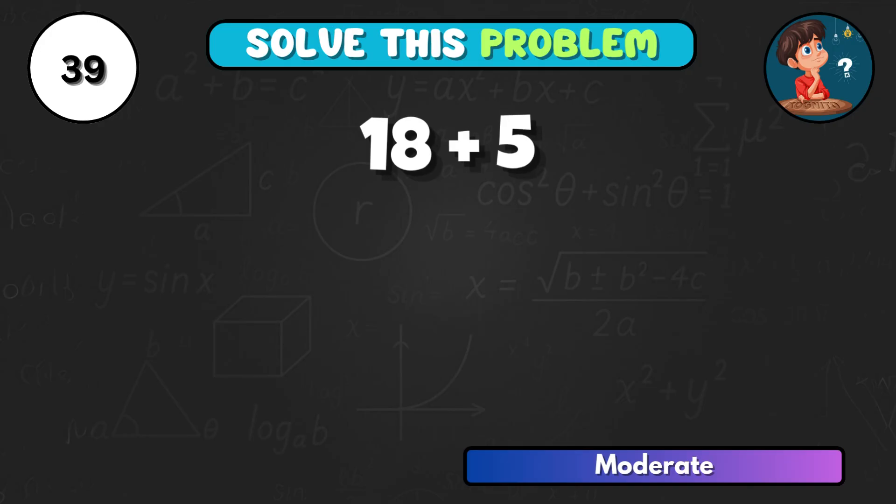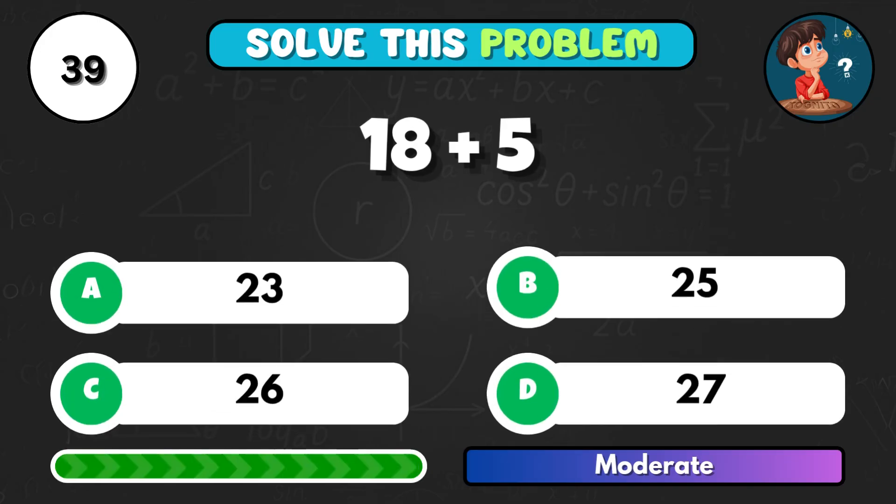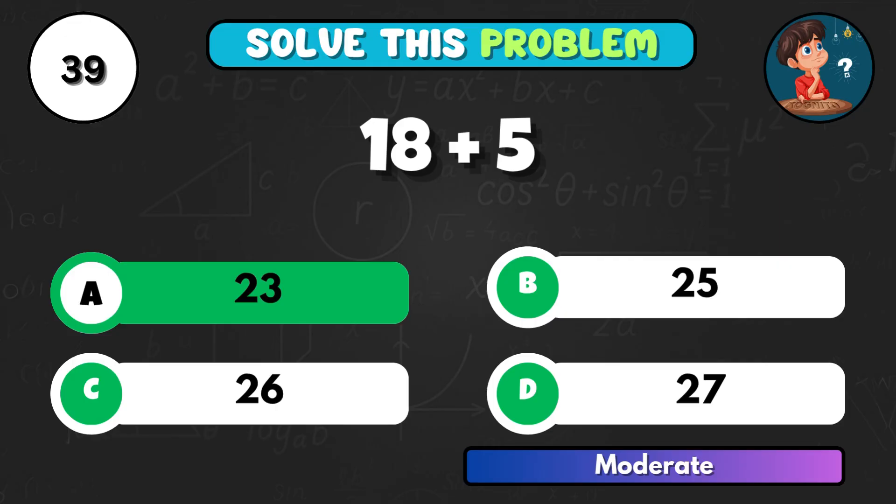18 plus 5, what do you get? That's A, and it comes to 23.